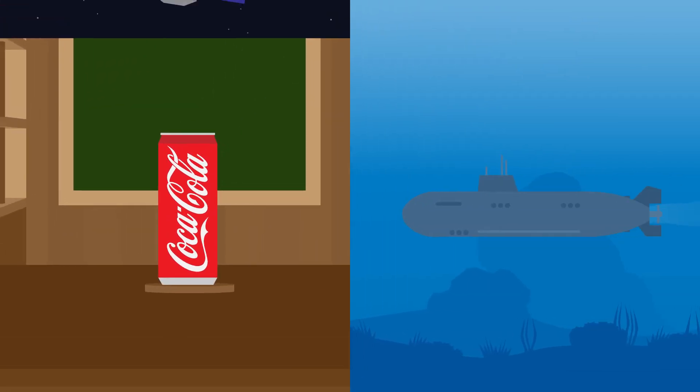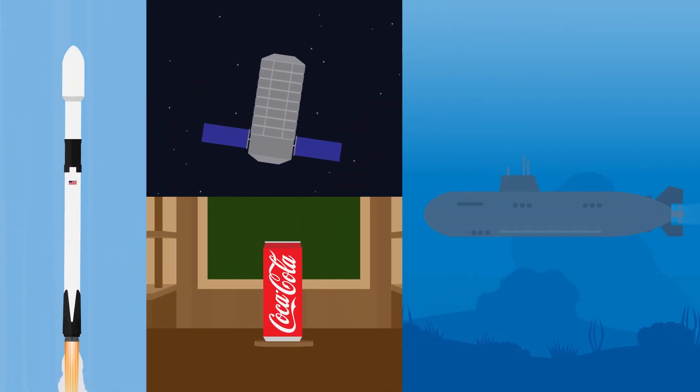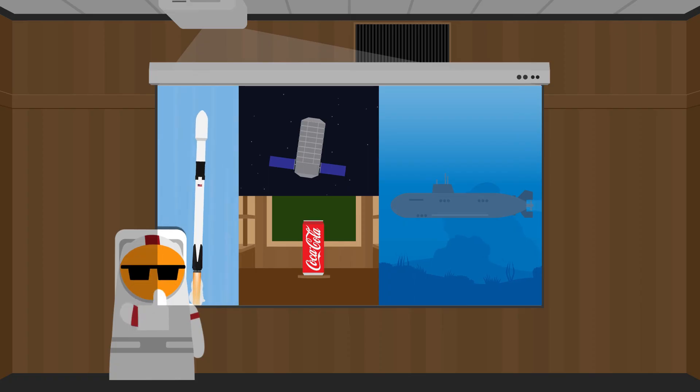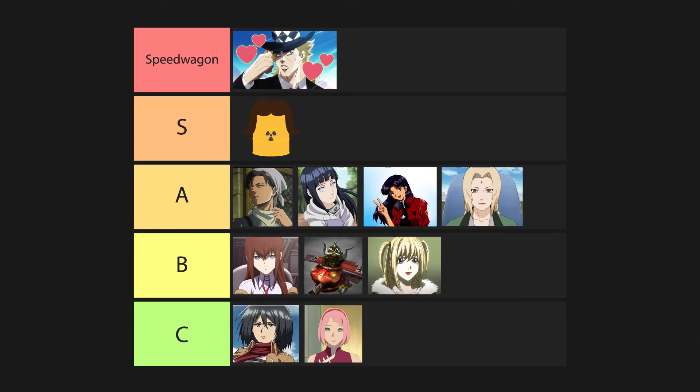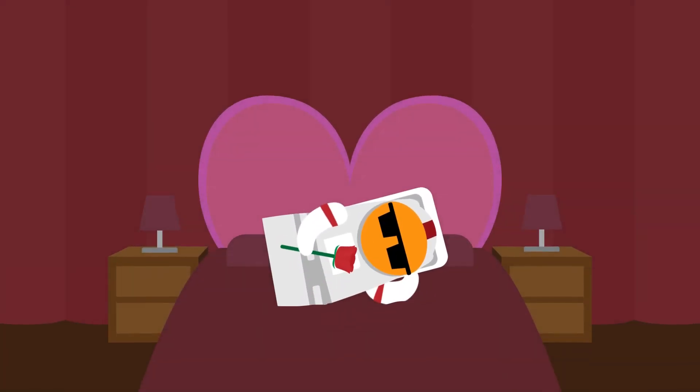Whether it's soda cans, submarines, space modules or even rockets. And if you still aren't convinced that cylinders are S-tier waifu material, let's take a detour to the sexy topic of manufacturing.